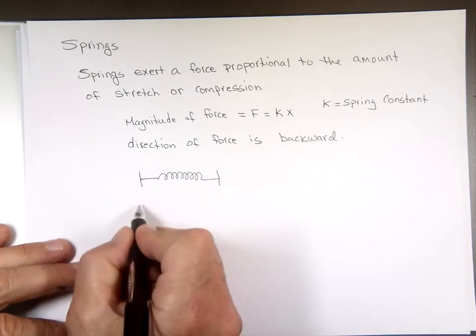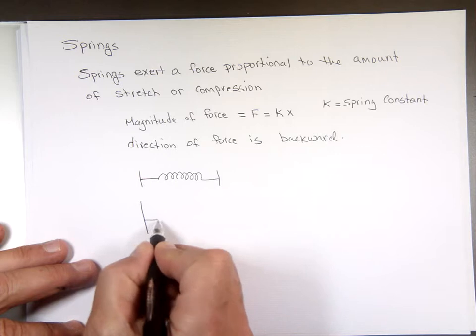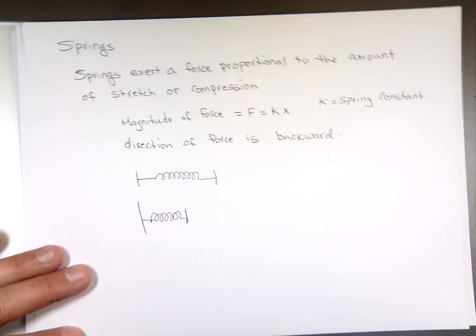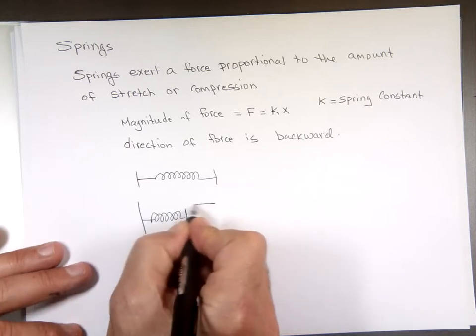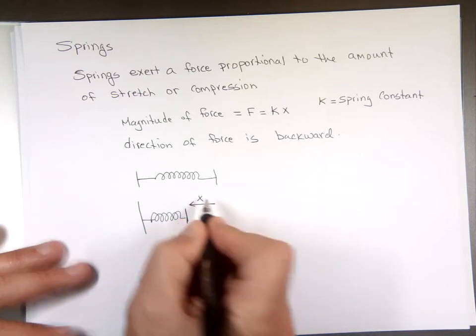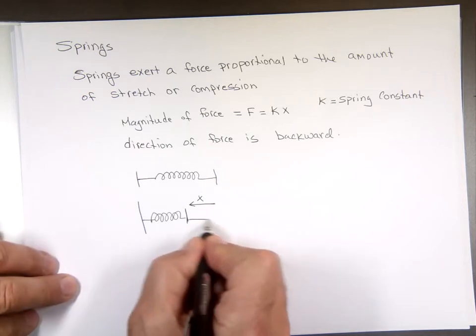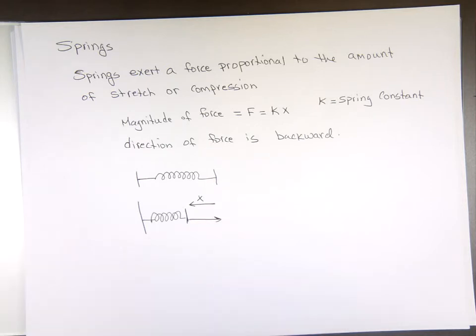What happens when you compress that spring? Notice X moved in that direction. Which way is the force pushing? The force is pushing to the right because if you let go it's gonna push it forward.